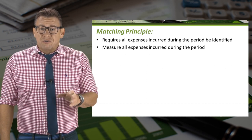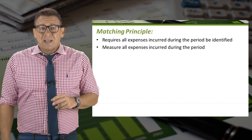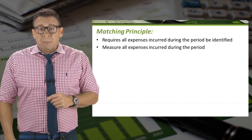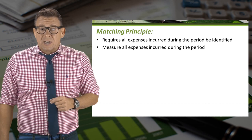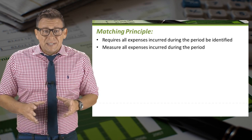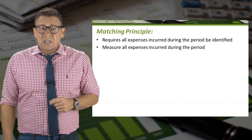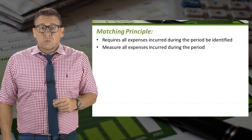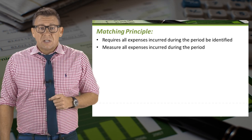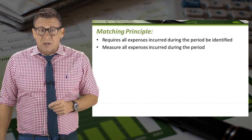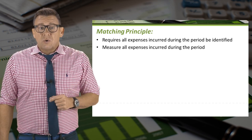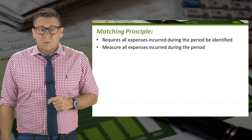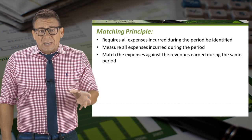I used to have to measure the amount of utility expense five dairy production plants incurred each month. Because of the accounting period concept, I couldn't wait until I received the utility bills in order to record the expense. Investors and creditors were waiting for the financial statements, so I had to estimate it each month. This was no easy task considering it was often around five million dollars.